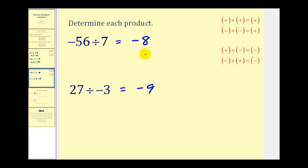And we can always check these with multiplication. For this example here, negative eight times seven should equal negative fifty-six. And it does.